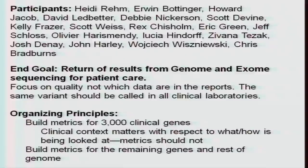As Rex pointed out, we want to be able to call every nucleotide accurately, but there's also how do we think about this from a clinical delivery side and a research side. David Ledbetter came up with the concept of should we build out different principles for the metrics on the 3,000 clinical genes and then build metrics on the remaining genes and the rest of the genome. We took that as a nice organizing principle.